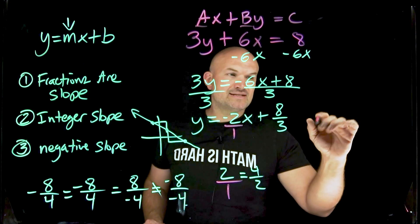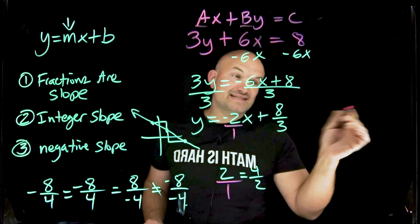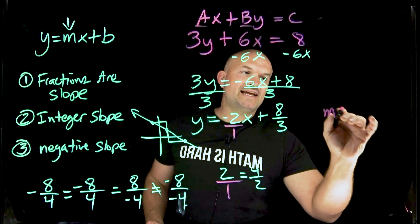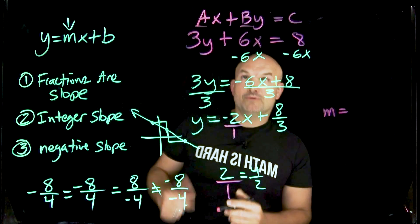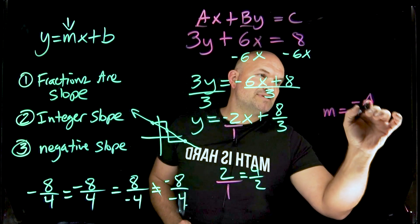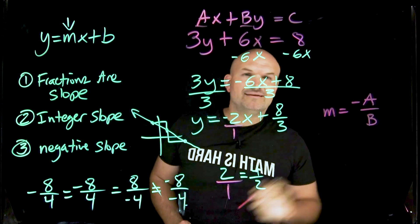Simply, our tip is, if you want to find the slope of a line that's already in standard form, just take m, which is going to be your slope, is going to be equal to the opposite of a divided by b and you are all set.